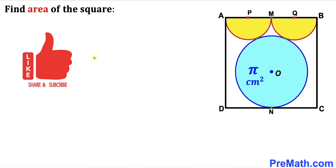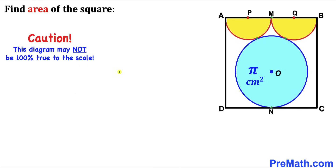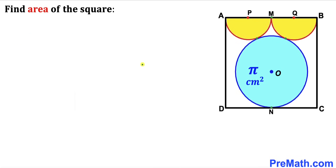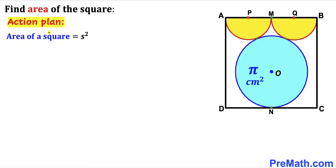Please give a thumbs up and subscribe, and keep in mind that this figure may not be 100% true to scale. Here's our action plan: since we are interested in calculating the area of square ABCD, let's recall the area of a square formula — area equals S squared, where S represents the side length of the square.